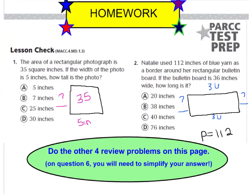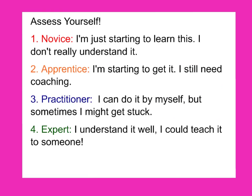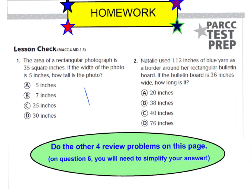Here are your homework questions for tonight. Number 1: The area of a rectangular photograph is 35 square inches. If the width of the photo is 5 inches, how tall is the photo? Number 2: Natalie used 112 inches of blue yarn as a border — border and around mean perimeter — around her rectangular bulletin board. If the board is 36 inches wide, how long is it? Remember for number 6, you'll need to simplify your answer. Don't forget to assess yourself at the top of your GoMath page.